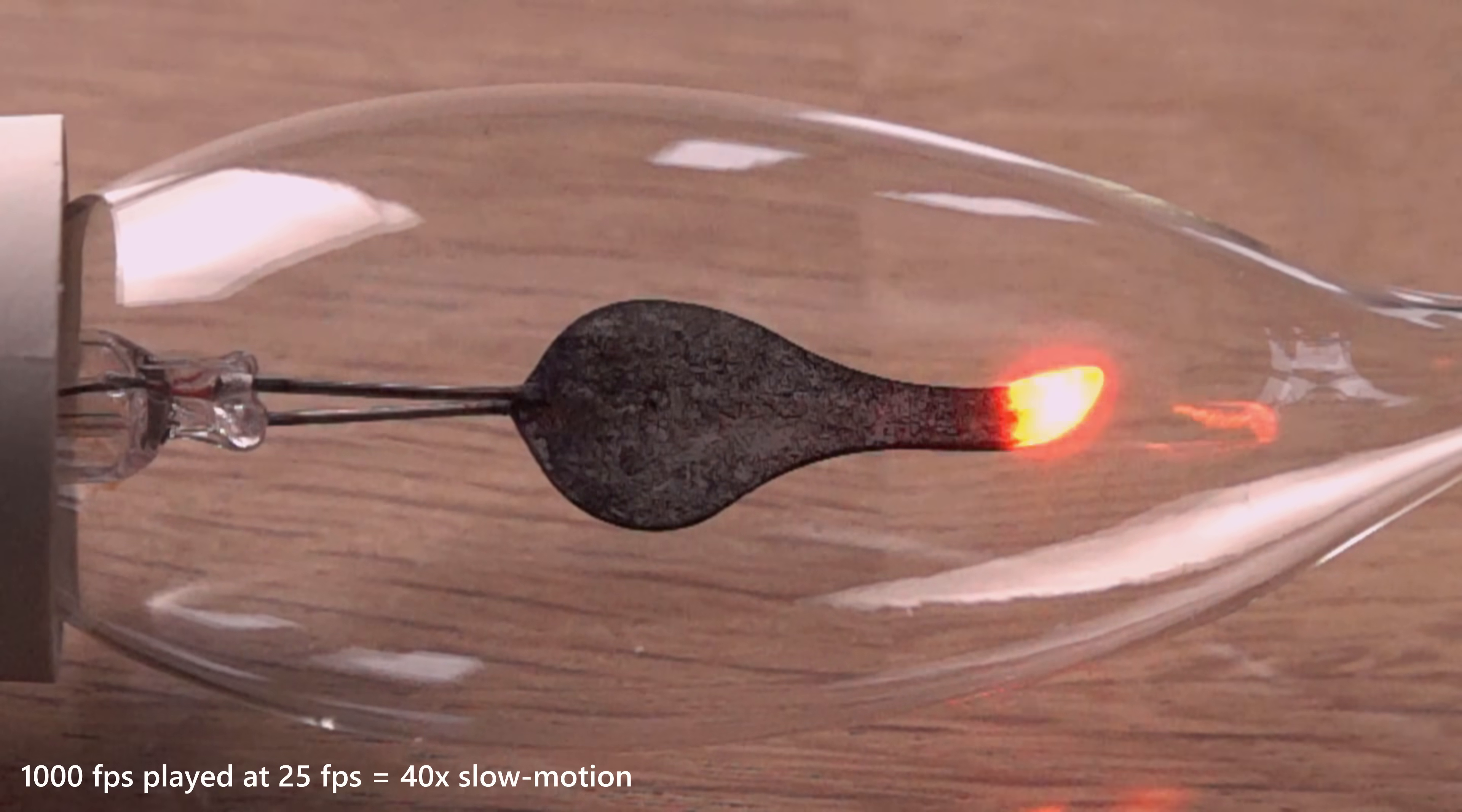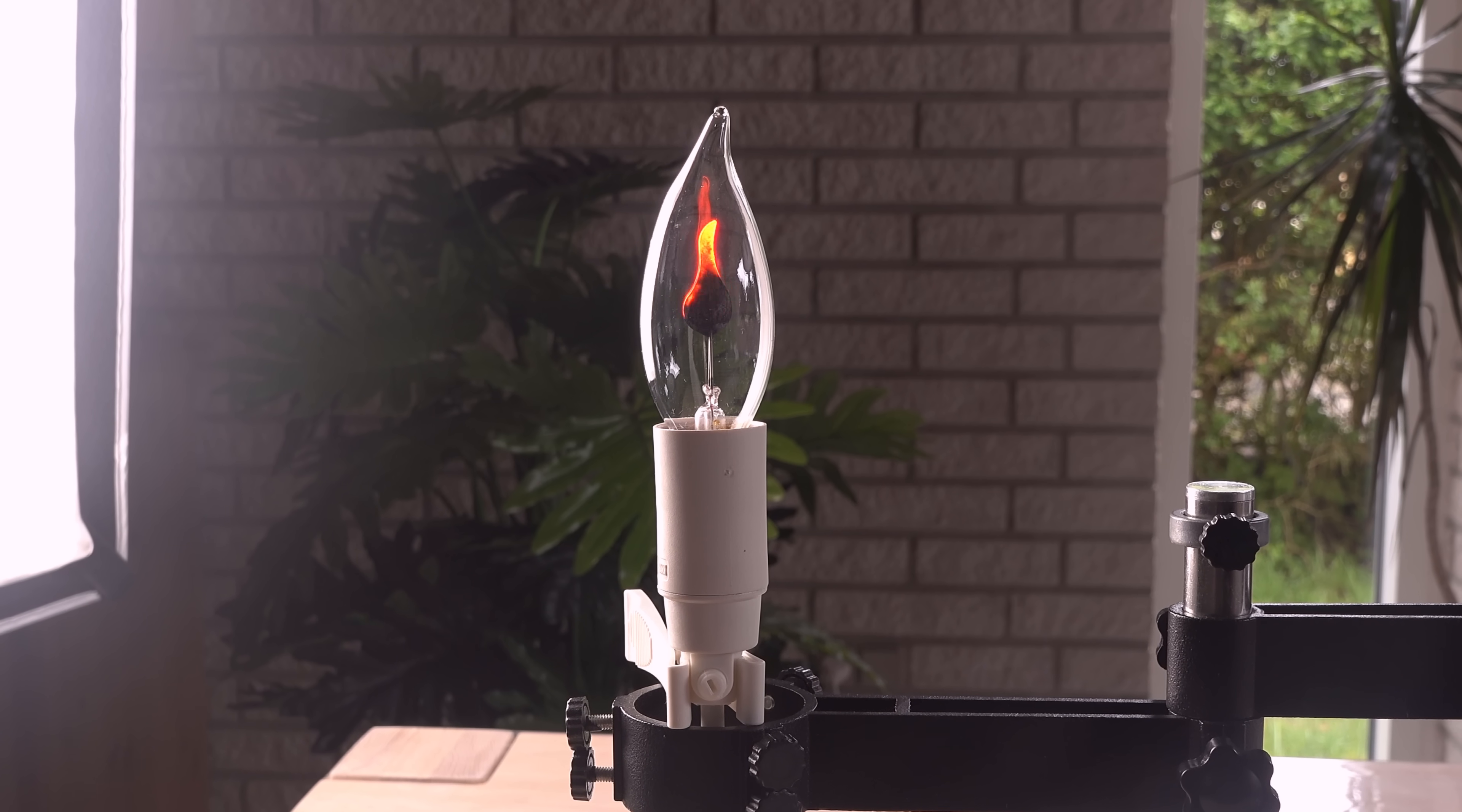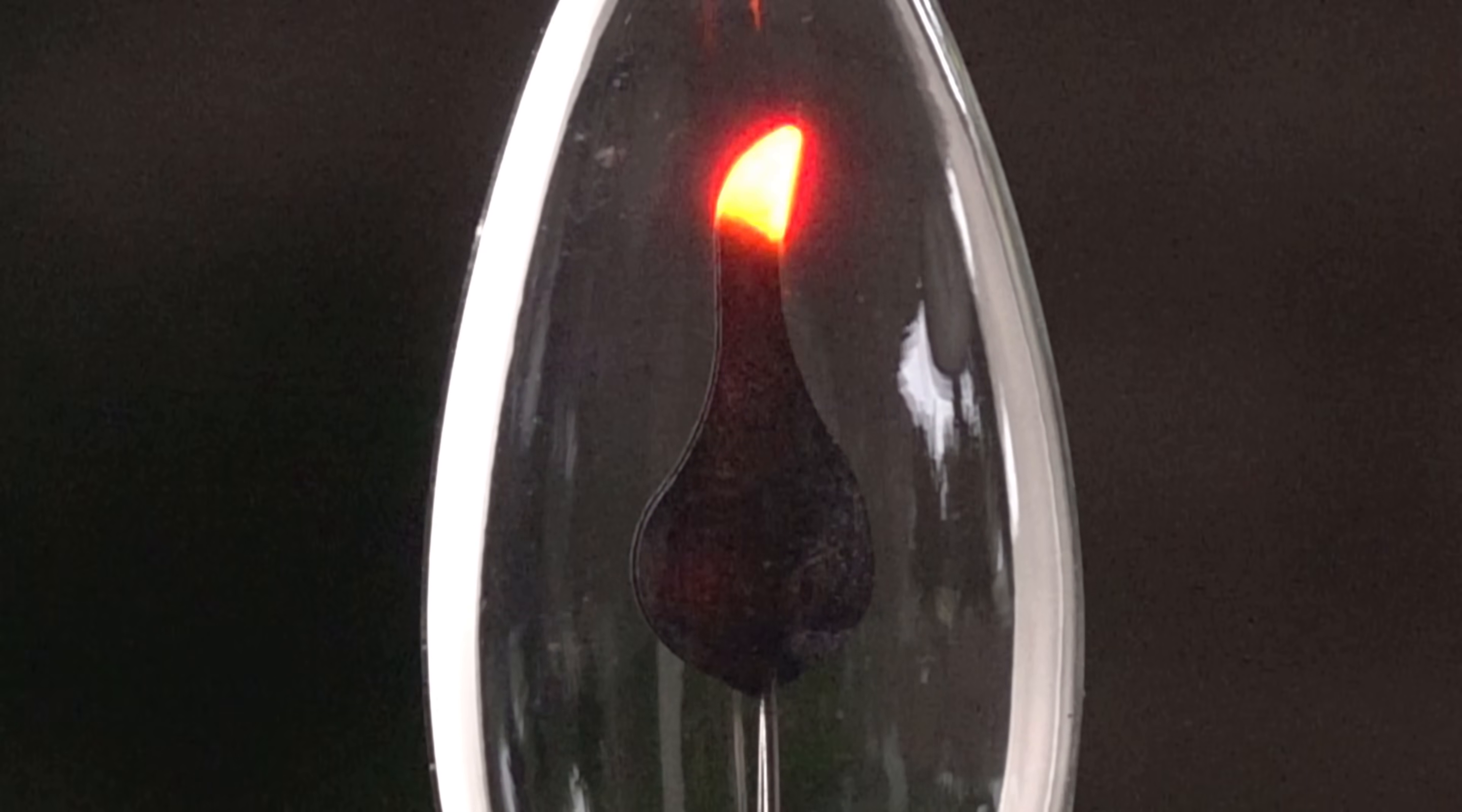This pattern reminds me of a Jacob's ladder, where the heated, ionized air rises and the arc follows it. I therefore also tried placing the lamp vertically as intended and record in slow motion again. Will the discharge now move upwards for each cycle, like in a Jacob's ladder? Nope. Still going from tip to bottom, the opposite way of a Jacob's ladder. Huh. What is going on?